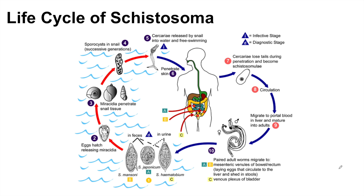Here is a diagram from the CDC on the life cycle of schistosoma. Starting at the egg stage, the eggs can be carried in the feces and urine from infected individuals. These eggs can be released into water and then hatched into what we call miracidia. Miracidia can then penetrate into snail tissue — the intermediate host. Sporocysts begin to accumulate in the snail, and then cercariae are released from the snail into the water. These cercariae are free swimming and can penetrate into the skin.